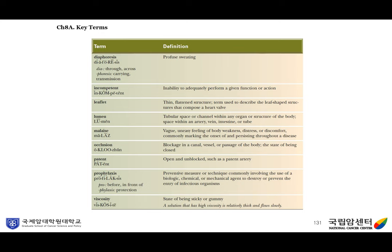Occlusion is a blockage in a canal, vessel, or passage of the body. Patent means open and unblocked, such as a patent artery — this is an adjective form. Prophylaxis means a preventive measure or technique commonly involving the use of a biologic, chemical, or mechanical agent to destroy or prevent the entry of infectious organisms. Viscosity is the state of being sticky or gummy.